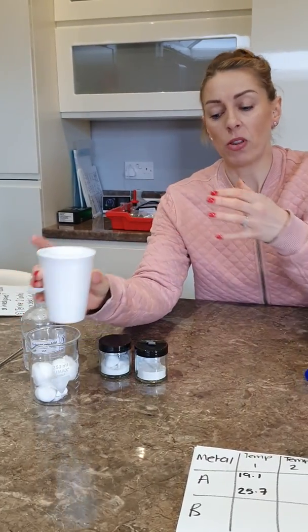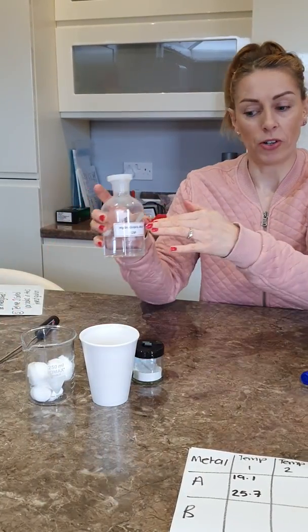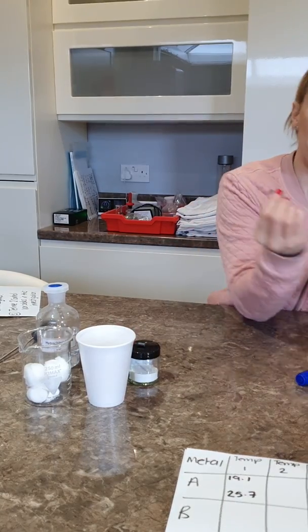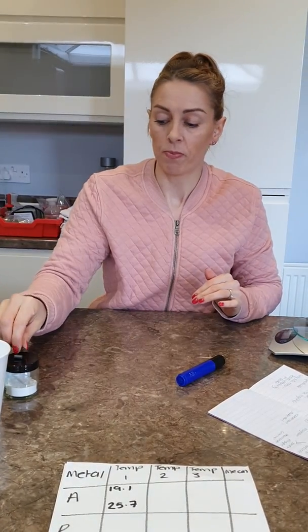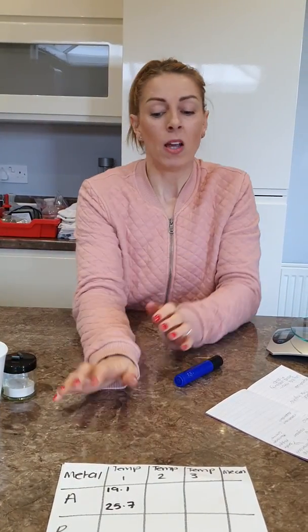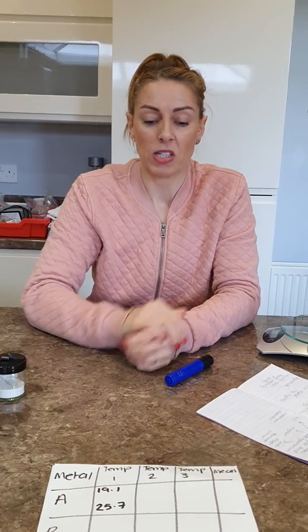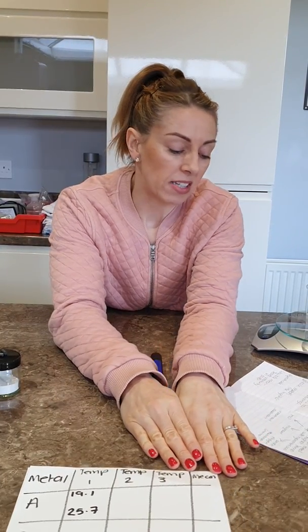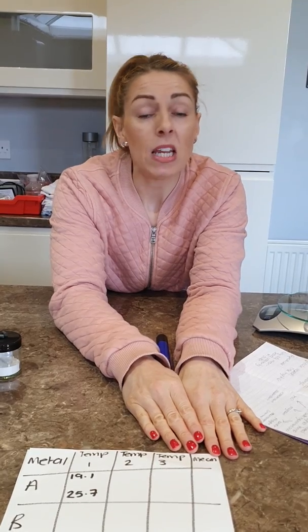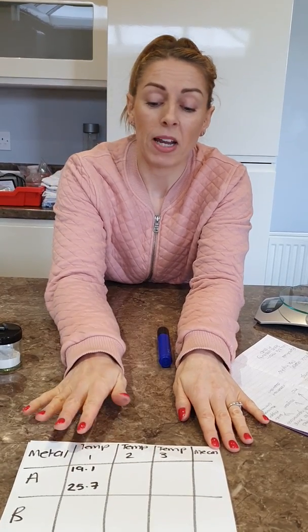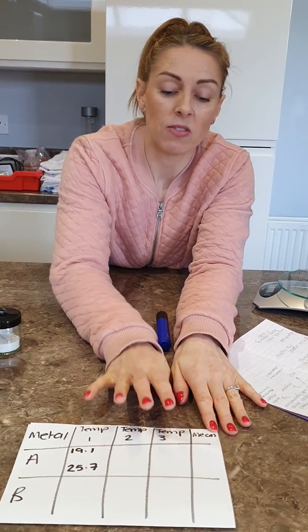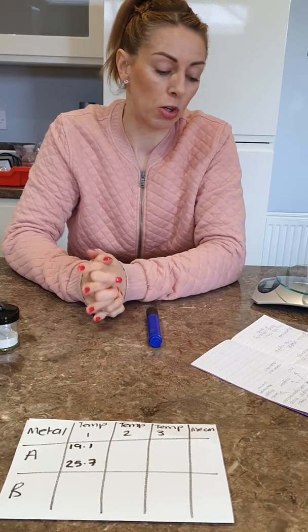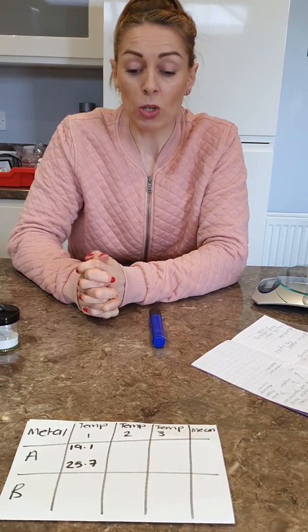I would then repeat the practical using a different metal — change my solution, start again with 50 ml of hydrochloric acid and the same mass but of a different metal, and repeat that three times as well. At the end, I would calculate a mean by adding up the data and dividing by how many times the experiment took place.